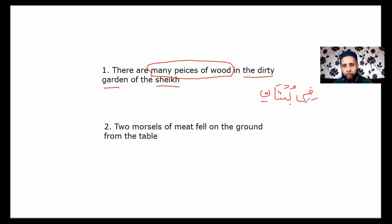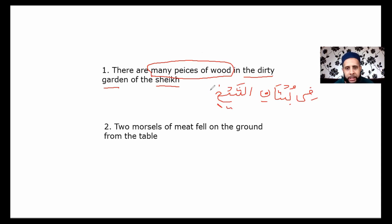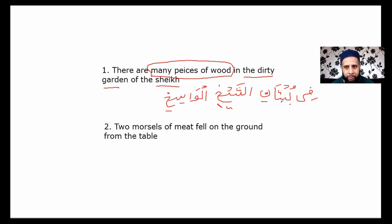It's genitive because there's a harf before it, and it's only going to get one kasra because mudaf can't have a tanween. The adjective matches bustaan in the four criteria. So it's going to be: في بستان الشيخ — the Shaykh is genitive because bustaan is genitive, and it's definite because bustaan is definite. When the mudaf ilaihi is definite, the mudaf becomes definite automatically.